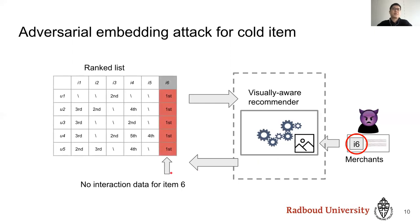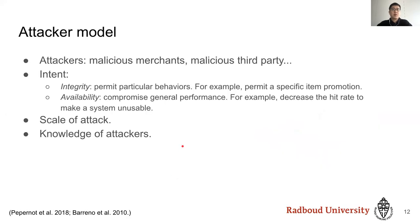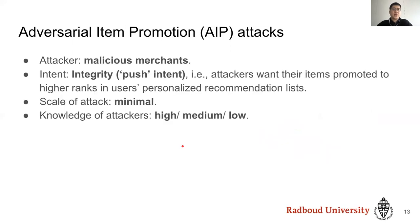So how does this attack work? Let's first define the attacker model. The attacker is able to manipulate the item image. The intent could be either compromising integrity or availability. We also assume that the attacker may have different levels of knowledge. In this paper, we assume the attacker is a malicious merchant with a push intent to compromise integrity, changing only one item image at a time. In the knowledge dimension, we assume high, medium, and low knowledge attacks.